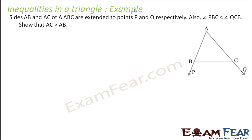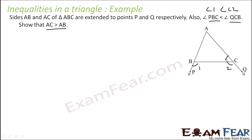Sides AB and AC of triangle ABC are extended to points P and Q respectively. It is given that angle PBC is less than angle QCB. Let angle PBC be angle 1 and angle QCB be angle 2. We have to prove that AC is greater than AB. The angle opposite to AC is angle 4, and the angle opposite to AB is angle 3, so we need to prove angle 4 is greater than angle 3.